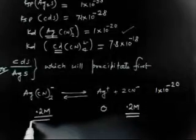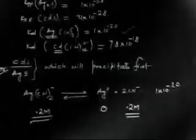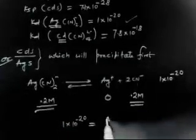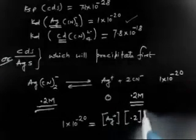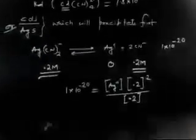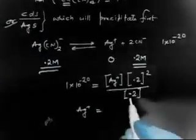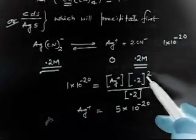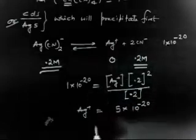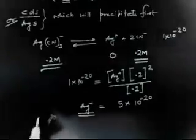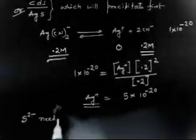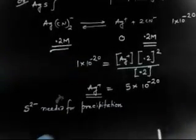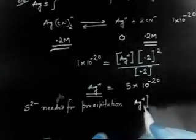Since we know [CN⁻], we can calculate [Ag⁺]. Writing the equilibrium expression: 1×10⁻²⁰ = [Ag⁺][CN⁻]² / [Ag(CN)₂⁻] = [Ag⁺] × (0.2)² / 0.2. Solving: [Ag⁺] = 5×10⁻²⁰ M. Now we can calculate the [S²⁻] needed for just precipitation of Ag₂S.